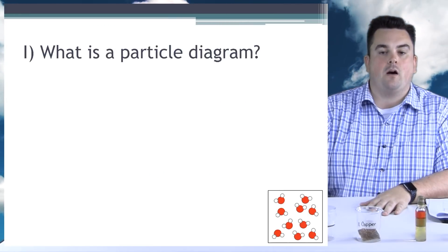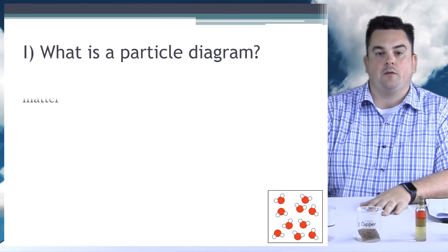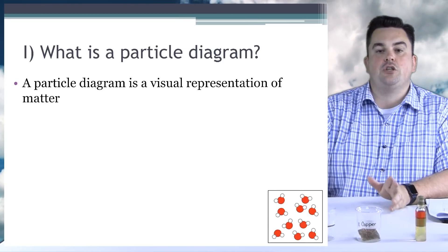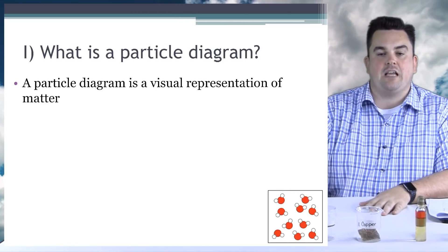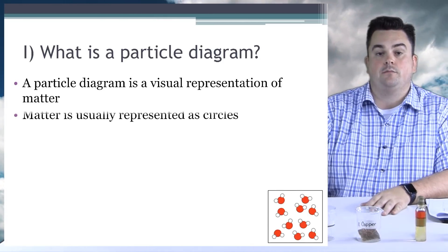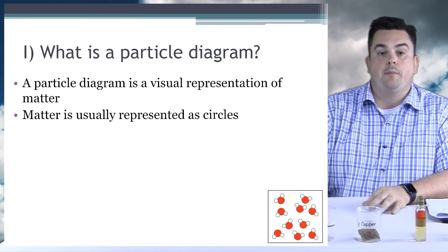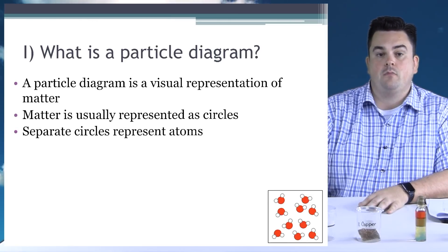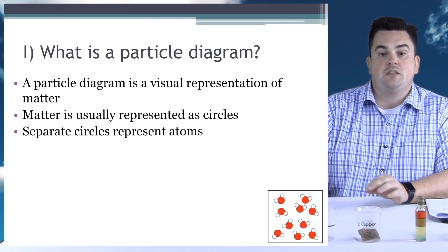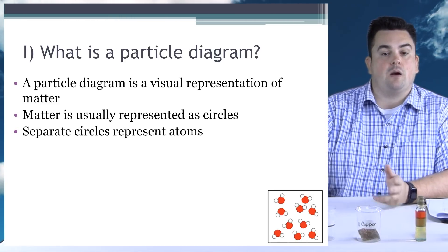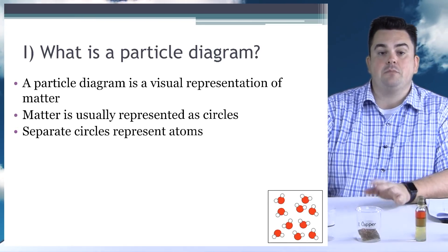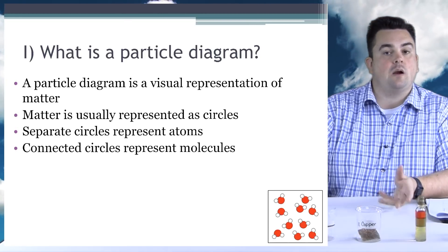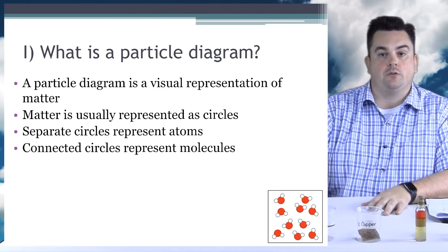What is a particle diagram? A particle diagram is a visual representation of matter. Matter is usually represented as circles. Separate circles represent atoms. Connected circles represent molecules.